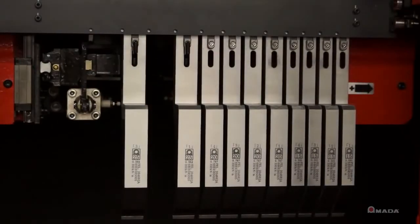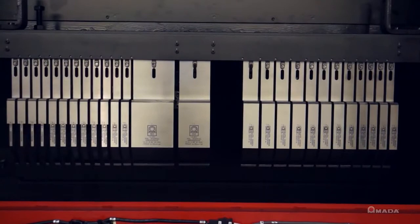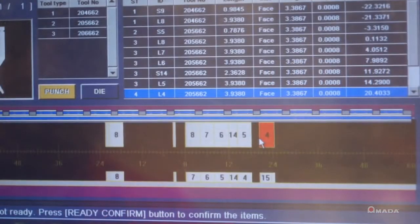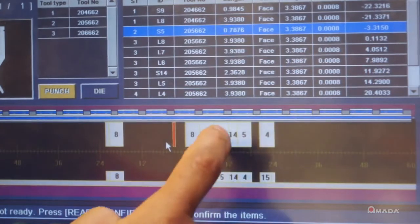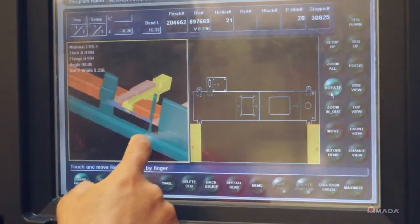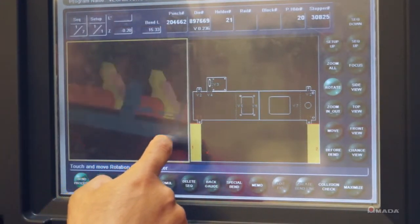The automatic tool changer enhances all of the manual operation features of the HD with quicker and more precise tool setup. The HD ATC is perfect for small lot sizes and complex tool layouts. Tooling setup and production can now be consistent from one operator to another and results in consistent high quality parts.